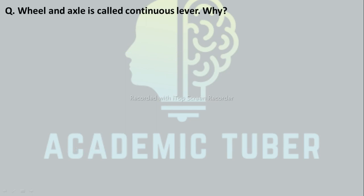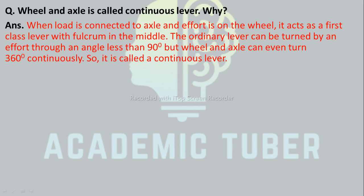Wheel and axle is a continuous lever. When the load is connected to the axle and effort is applied on the wheel, it acts as a first-class lever with the fulcrum in the middle. An ordinary lever can be turned by an effort using an angle less than 90°, but a wheel and axle can turn 360° continuously. So it is called a continuous lever.